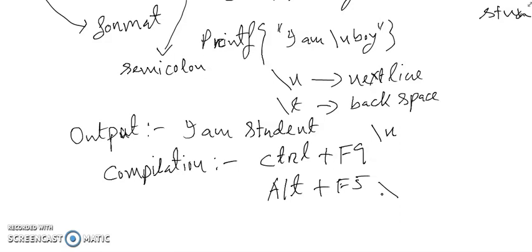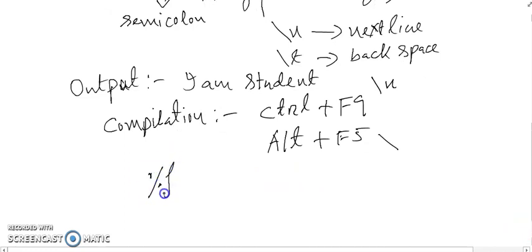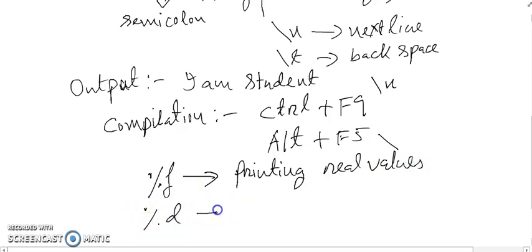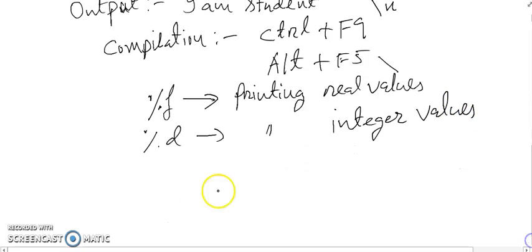Now I discuss something. Percentage F, percent F means float, printing real values for printing real value. Percent D, that is printing integer values. And percent C, printing character values.